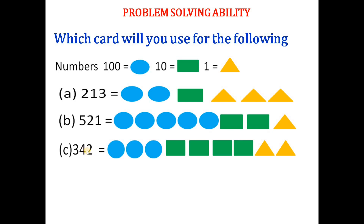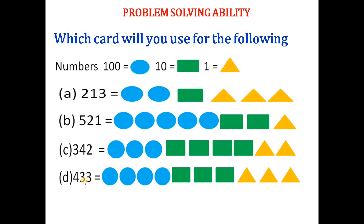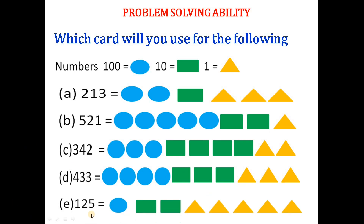For 342: 3 circles for hundreds, 4 rectangles for tens, 2 triangles for ones. For 433: 4 circles for hundreds, 3 rectangles for tens, 3 triangles for ones. For 125: 1 circle for hundreds, 2 rectangles for tens, 5 triangles for ones. That completes this chapter on numbers.